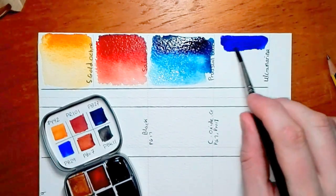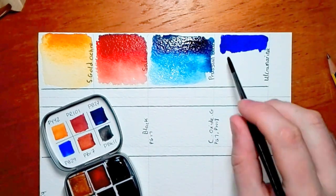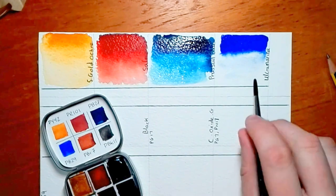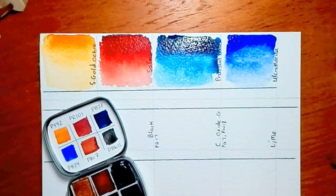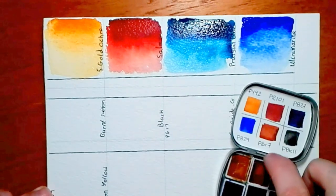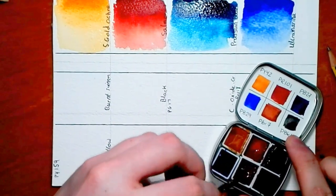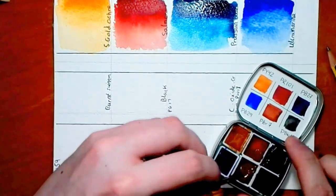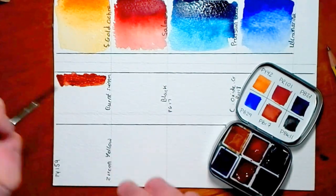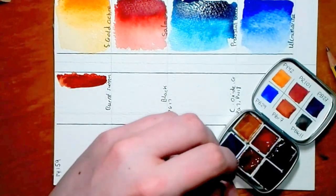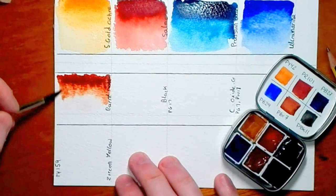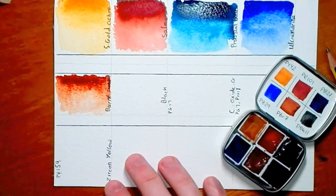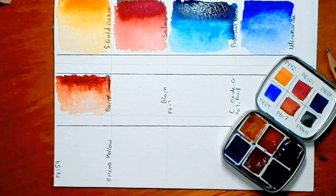Now the next one is ultramarine blue and this is a beautiful blue. It's very bright, very vibrant. It really sort of sings. Now the next color is burnt sienna which is PBR7, normal pigment information for that one. Again that's a really nice burnt sienna. It flows beautifully and it's really good.